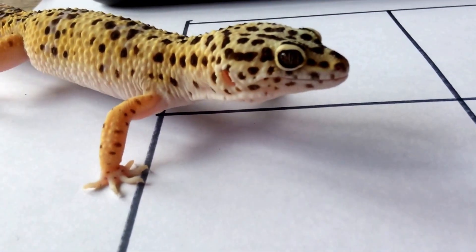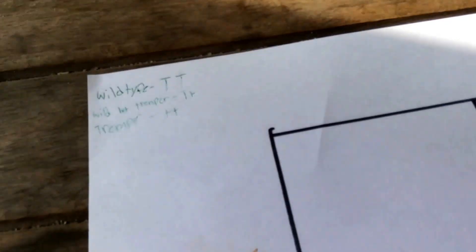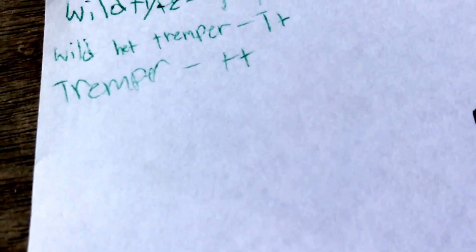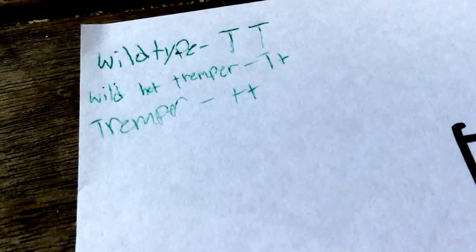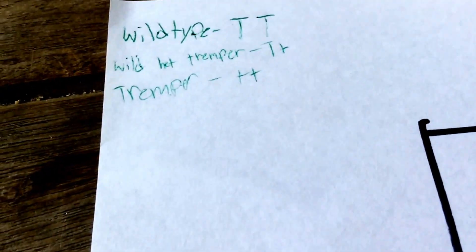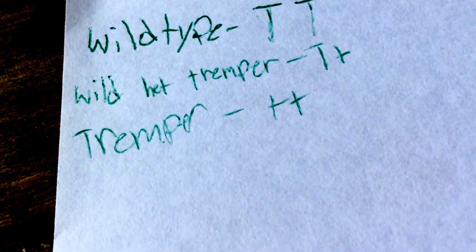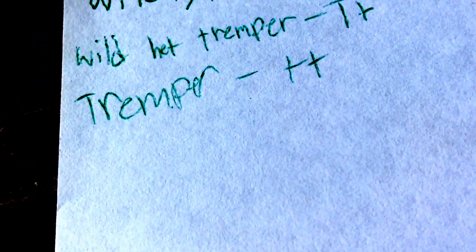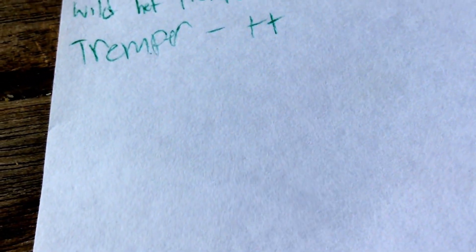Like I just said, it's recessive. To represent the different types of albinism and normal traits, we're going to use TT, which is homozygous dominant for a wild type — also known as normal. If the gecko is albino, it would be homozygous recessive. For albinos, you can infer all of the recessive genes. The traits — the alleles — will only show if they're double, if they have both of the recessive genes.